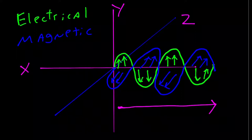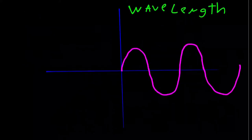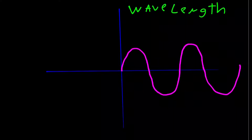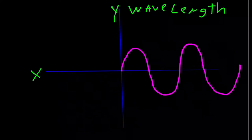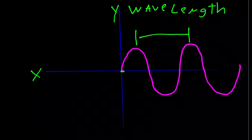For simplicity, a wave can be depicted on x and y axes. We measure wavelengths either peak to peak — from one peak to the next — which is considered one wavelength, or trough to trough, which gives us the same measurement.